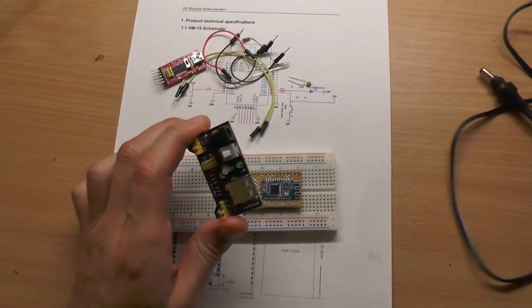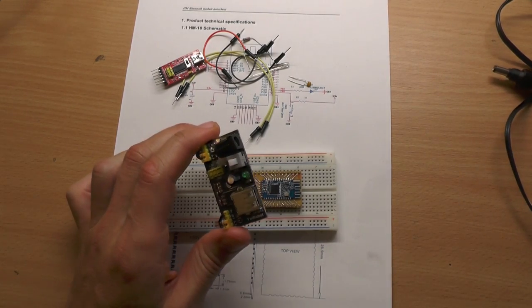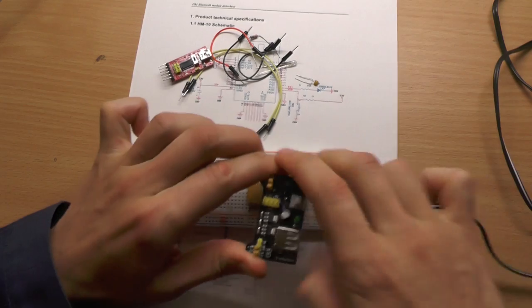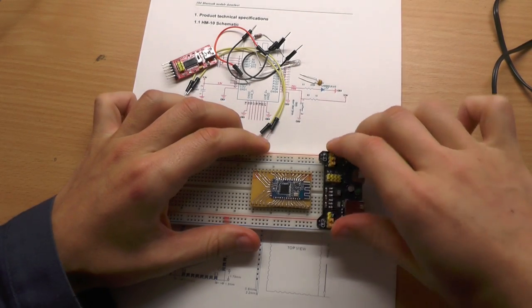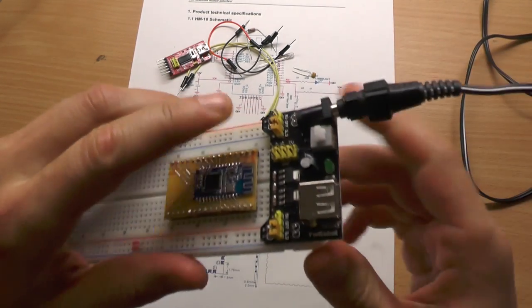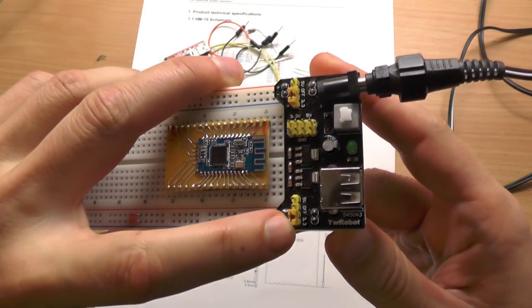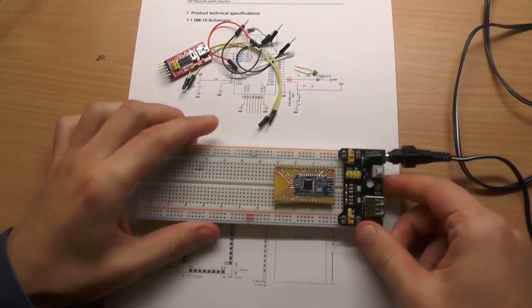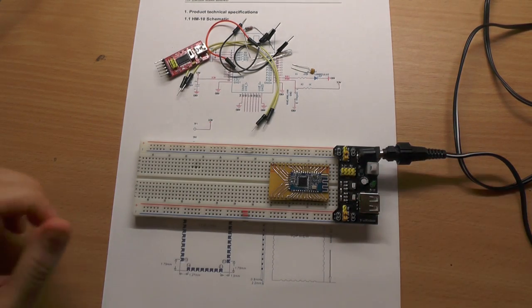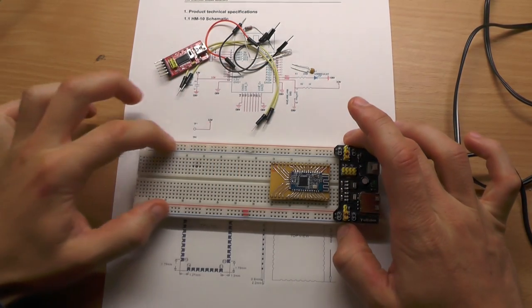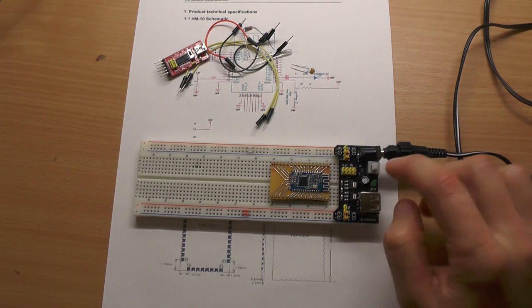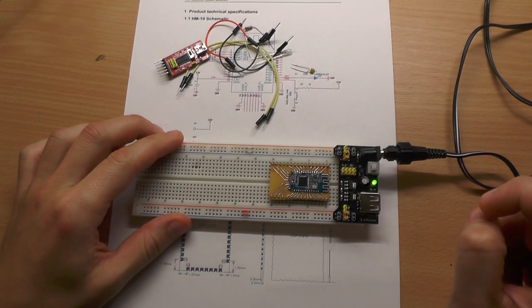You have to take care you set your jumpers to 3.3 volts on both sides. Here now it's regulated and our power rails are powered with 3.3 volts as soon as I turn it on here.